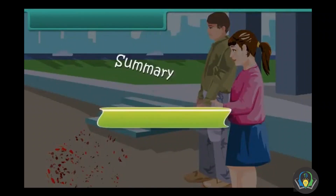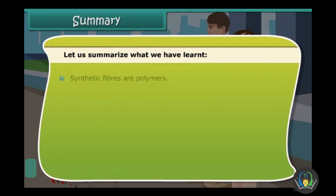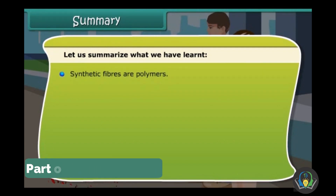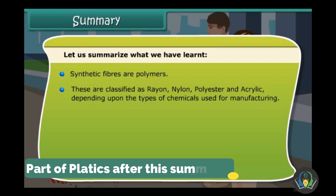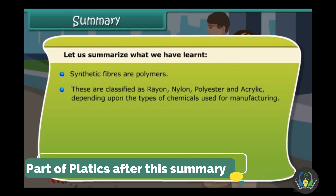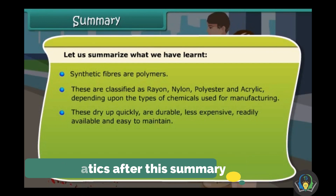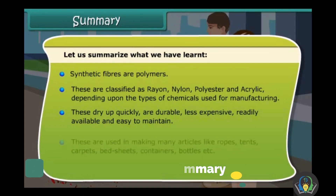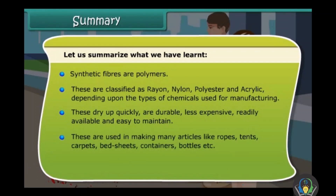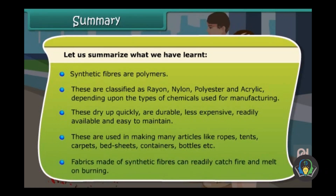Let us summarize what we have learnt. Synthetic fibers are polymers. These are classified as rayon, nylon, polyester and acrylic depending upon the types of chemicals used for manufacturing. These dry up quickly, are durable, less expensive, readily available and easy to maintain. These are used in making many articles like ropes, tents, carpets, bed sheets, containers, bottles, etc. Fabrics made of synthetic fiber can readily catch fire and melt on burning.